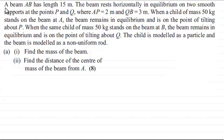So we've got here a beam AB which has a length of 15 meters. The beam rests horizontally in equilibrium on two smooth supports at the points P and Q where AP is 2 meters and QB is 3 meters.